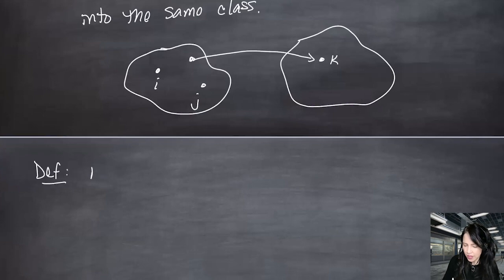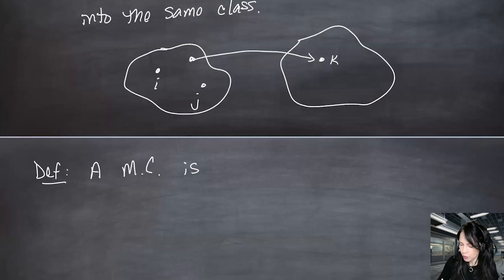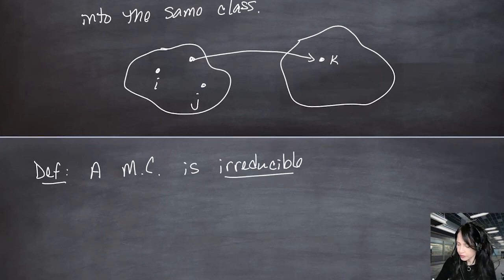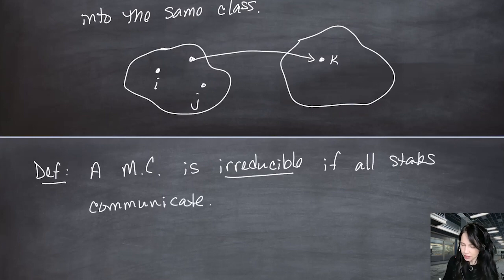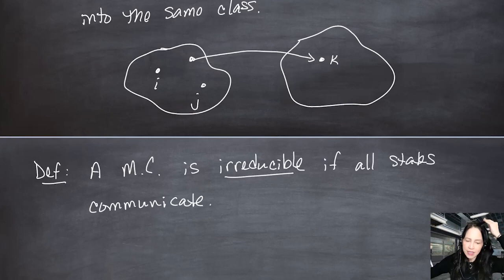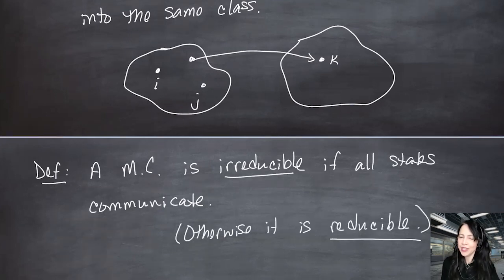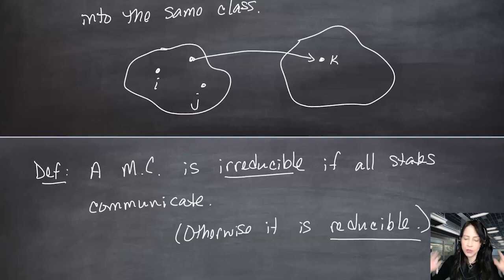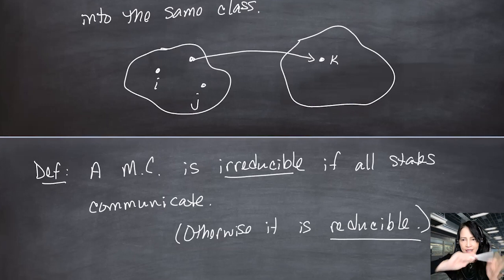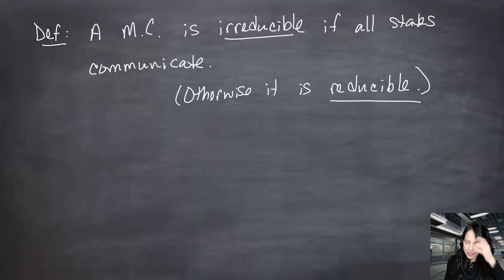Remember, we're trying to establish sufficient conditions for a limiting distribution, and irreducibility is one of them. So we're building up these definitions to eventually say: if your Markov chain is irreducible and has this and that property, then this limit exists and here's how to find it. Let's do an example of finding communication classes.